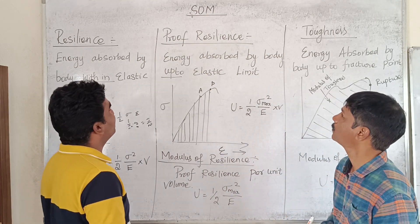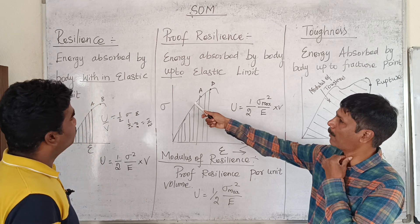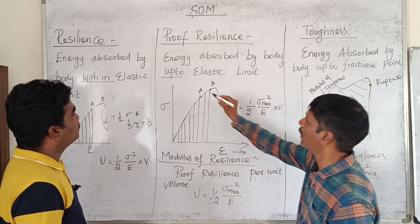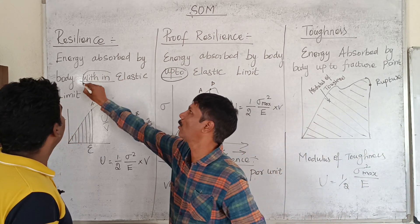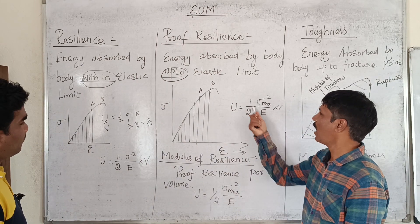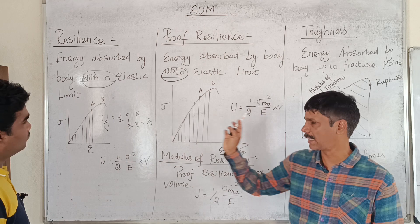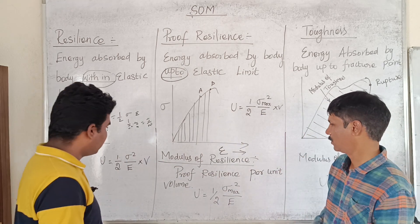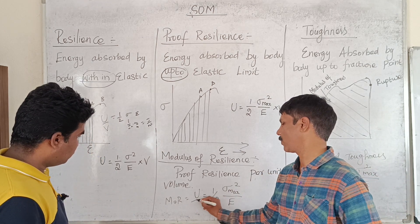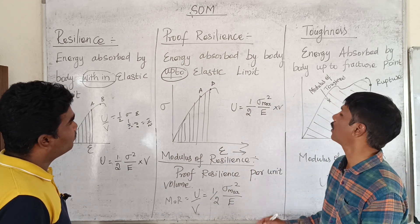Energy absorbed by the body up to the elastic limit is the proof resilience. From the elastic limit, the maximum strength gives the proof resilience. We can use the formula: half sigma max squared divided by E, into volume — that gives proof resilience.